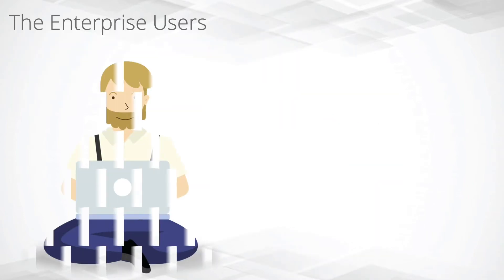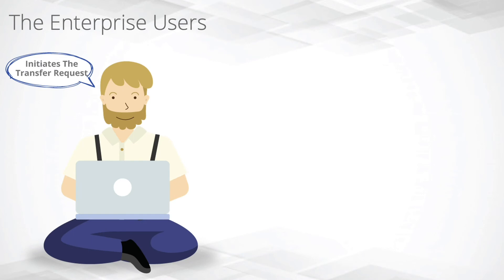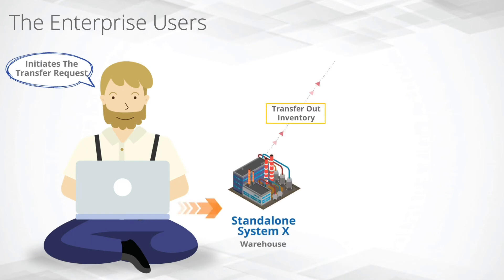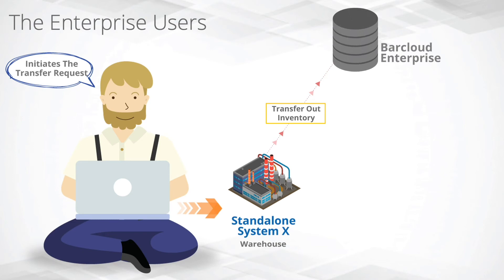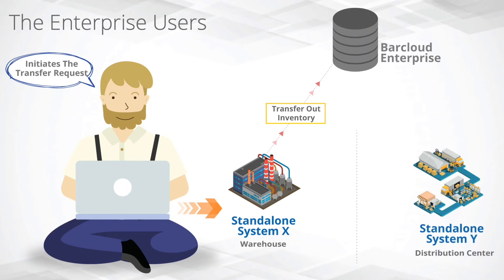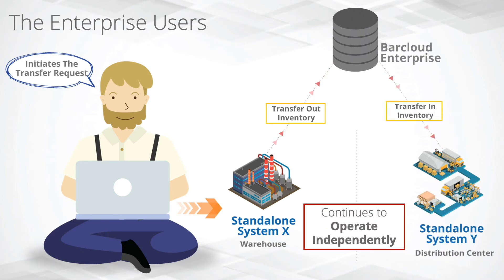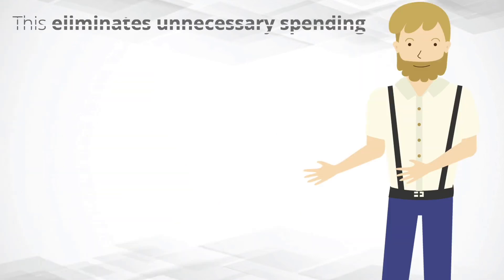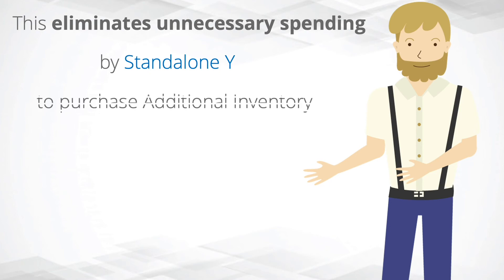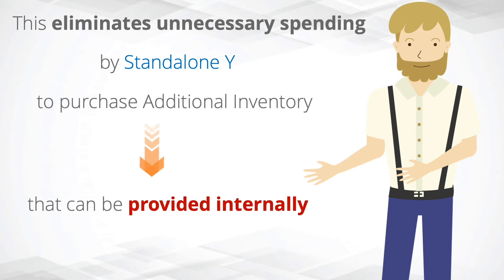The enterprise user initiates the transfer request, Standalone X transfers out the inventory, and Standalone Y transfers the inventory in and continues to operate independently. This eliminates unnecessary spending by Standalone Y to purchase additional inventory that can be provided internally by Standalone X.